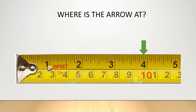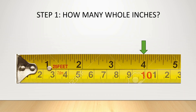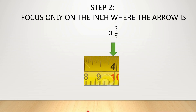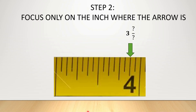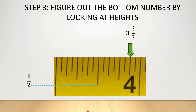In this example, if we were asked where is the green arrow pointing in inches, you always go to your very first step: how many whole inches has this green arrow passed? It's past the 1 inch mark, past the 2 inch mark, and past the 3 inch mark, but it's not yet past the 4 inch mark. So we're going to write 3 inches and something over something. Our next step is to focus on just that inch segment, removing all distractions and zooming in.